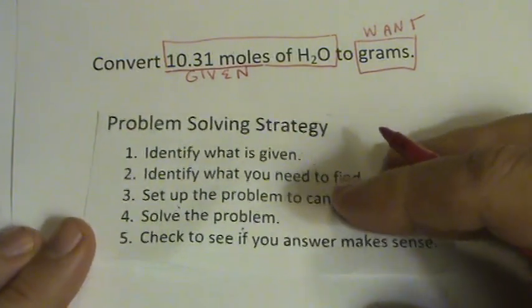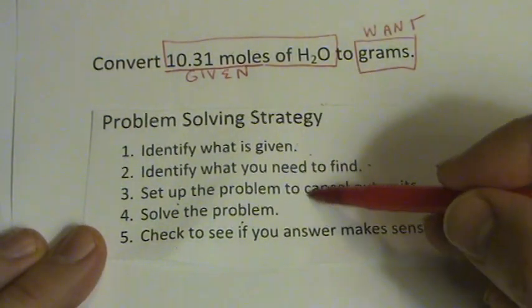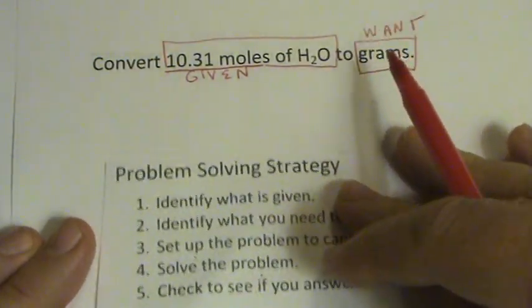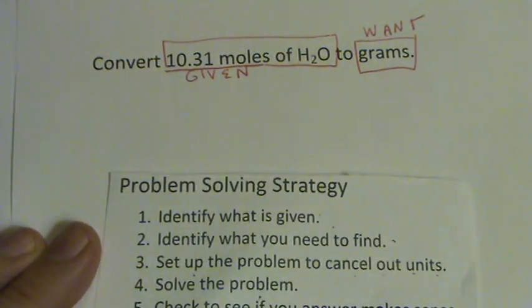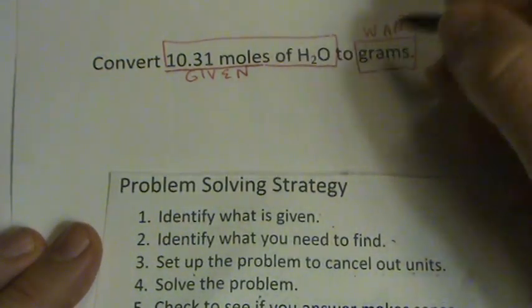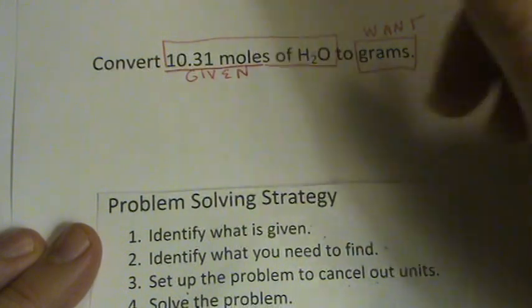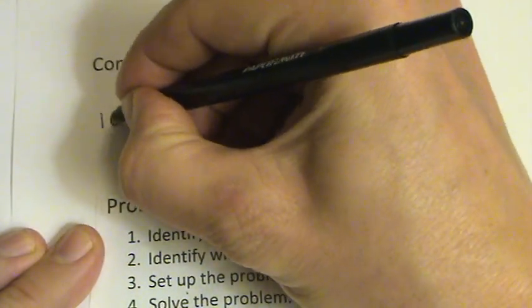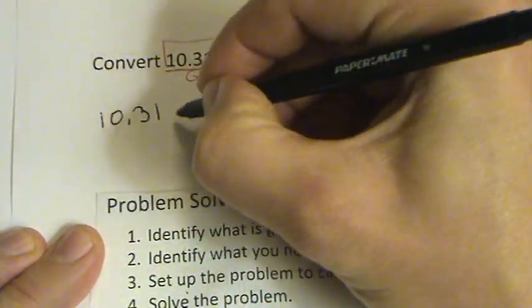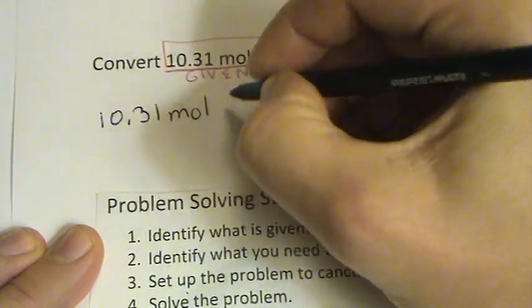So once I know what I'm looking for, I can go ahead and set the problem up to cancel out the units and end up with, in this case, grams. So let's see. I got 10.31 moles of H2O.